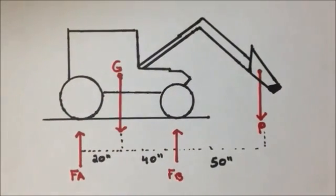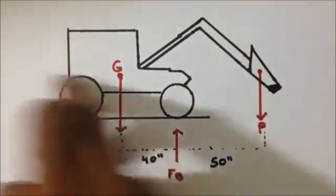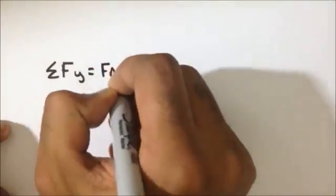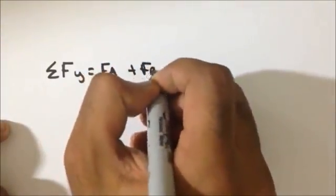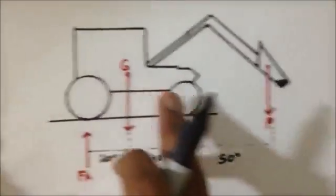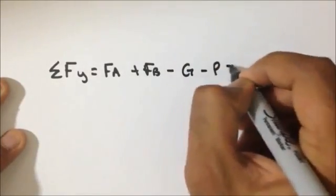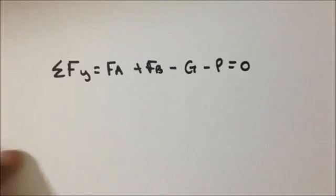Let us proceed implementing the first equation in the y direction. The reason we use the y direction is because we only have forces in the y direction — we have no forces in the x direction. The sum of the forces in the y direction equals: FA and FB are directed upward, so they are positive — FA plus FB. The center of gravity G and the weight of the gravel P are directed downward, so they are negative — minus G minus P. We set those equal to zero.